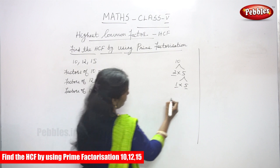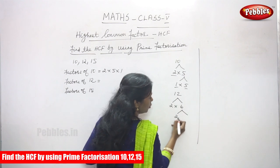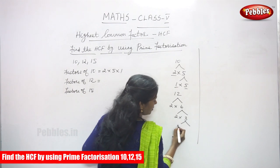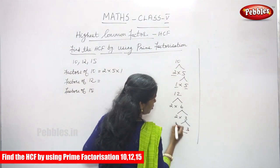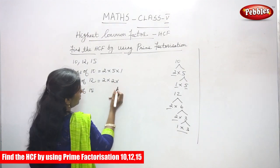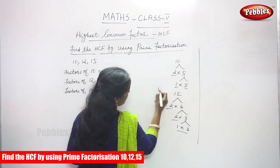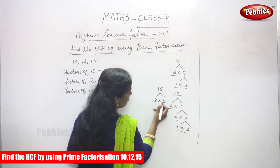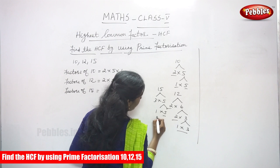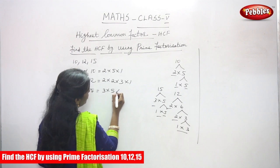Next, factors of 12: 12 is 2 into 6, then 2 into 3, so 2 into 2 into 3 into 1. Next, factors of 15: 3 into 5, and again 1 into 5, so 3 into 5 into 1.